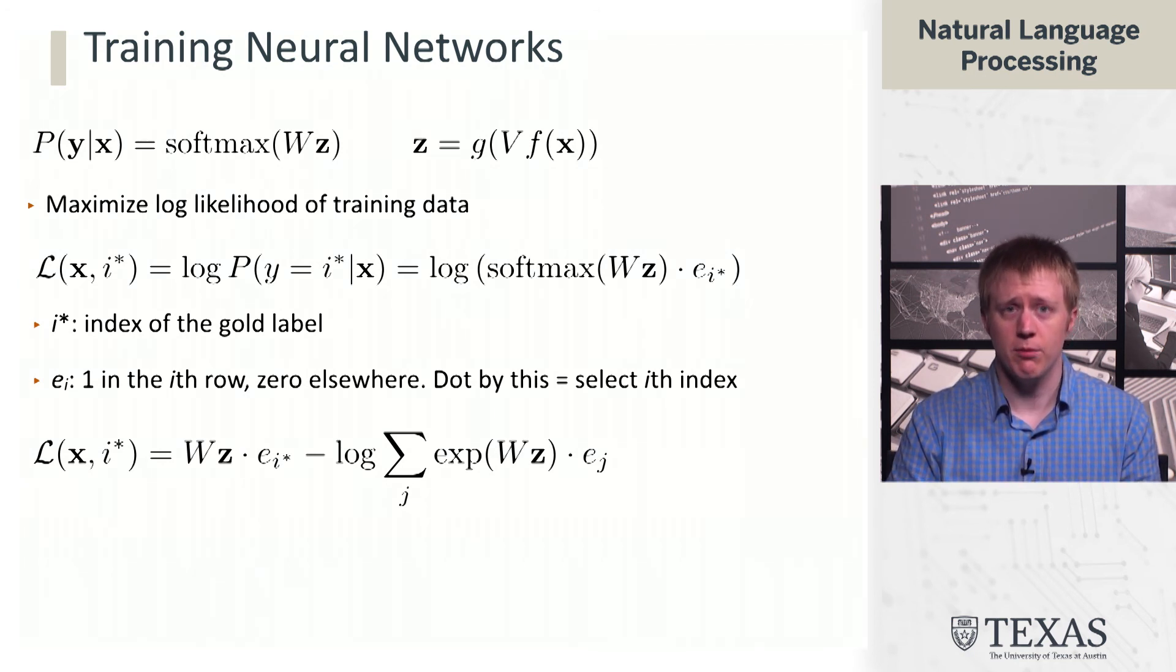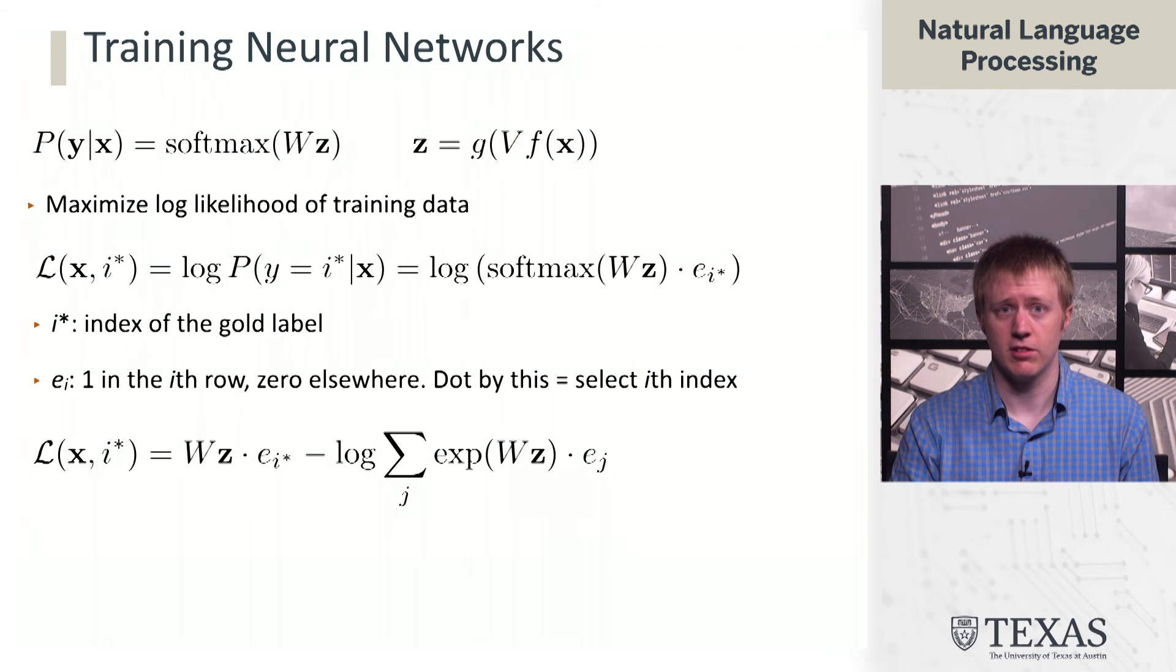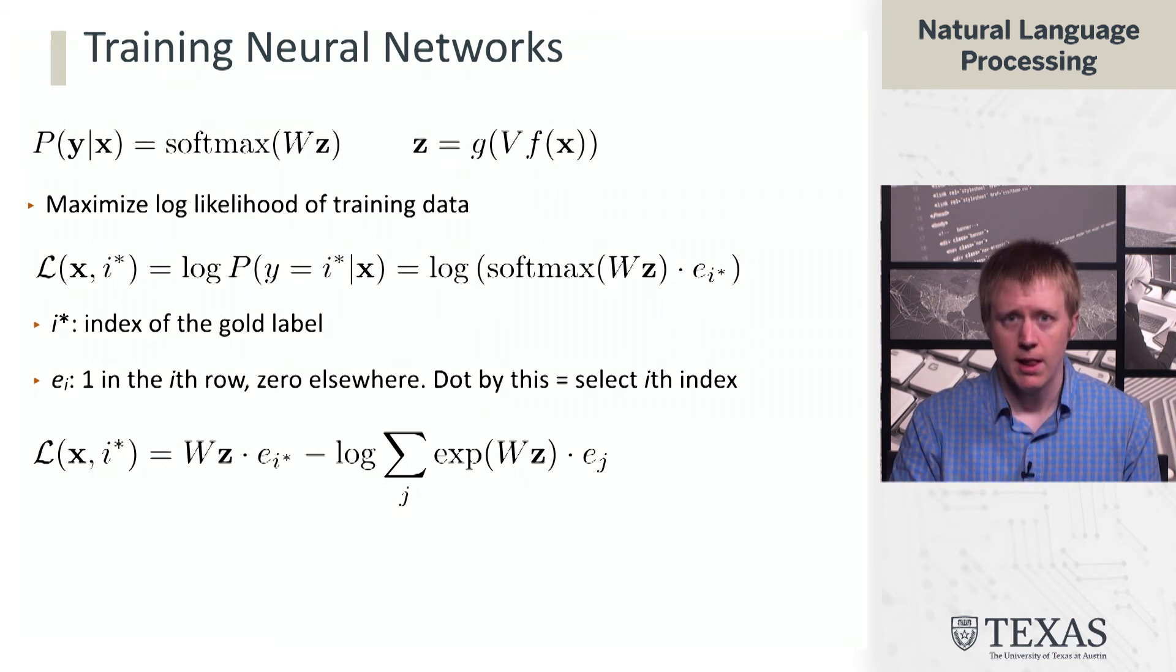If we apply the log, we get an equation which looks like this. It's a little different than the multi-class logistic regression case, but it's actually the same. We have this linear term, which looks like the weights of the correct class dotted with z, then we subtract off this log sum of exponential term from the denominator.